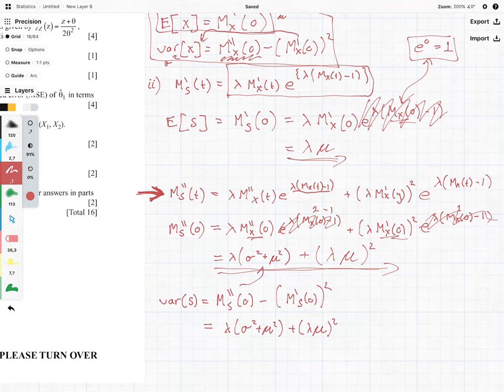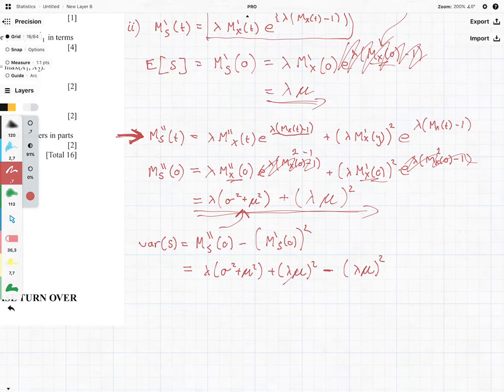which means we have our terms here. This I'm getting straight from over here, but now we need to subtract lambda mu squared over here. And those two cancel each other out, and we have our answer as follows: lambda sigma squared.